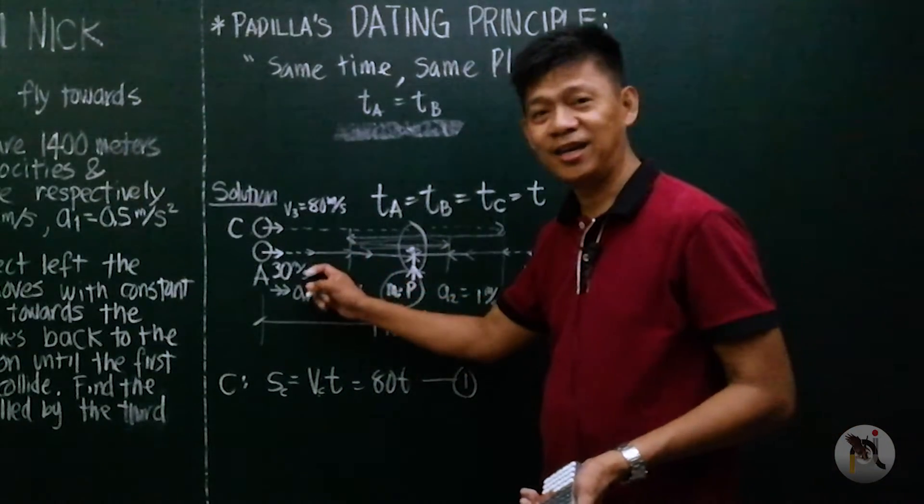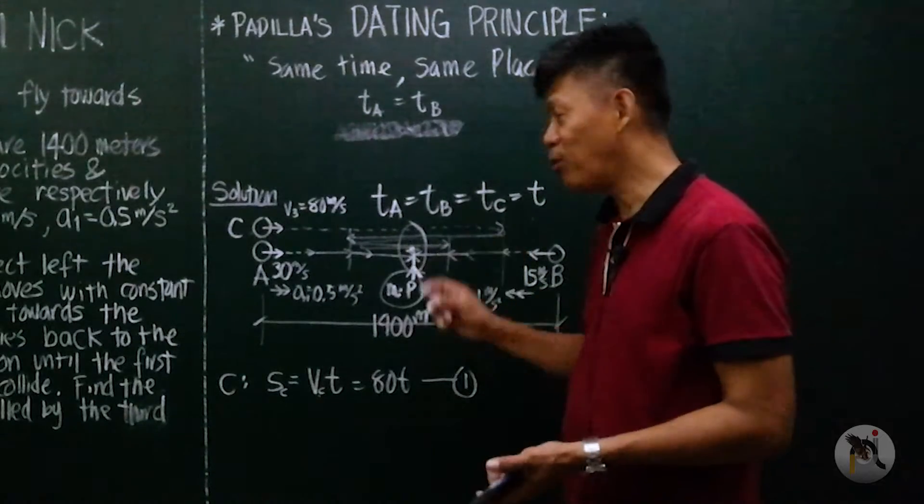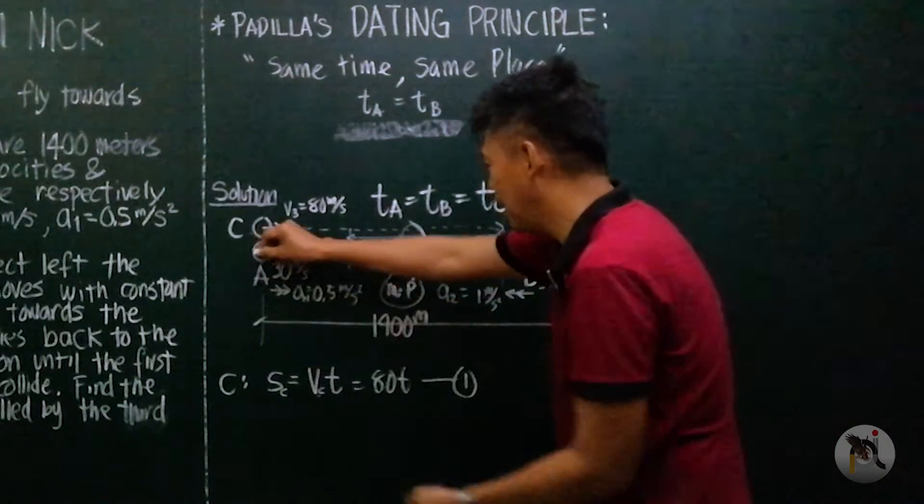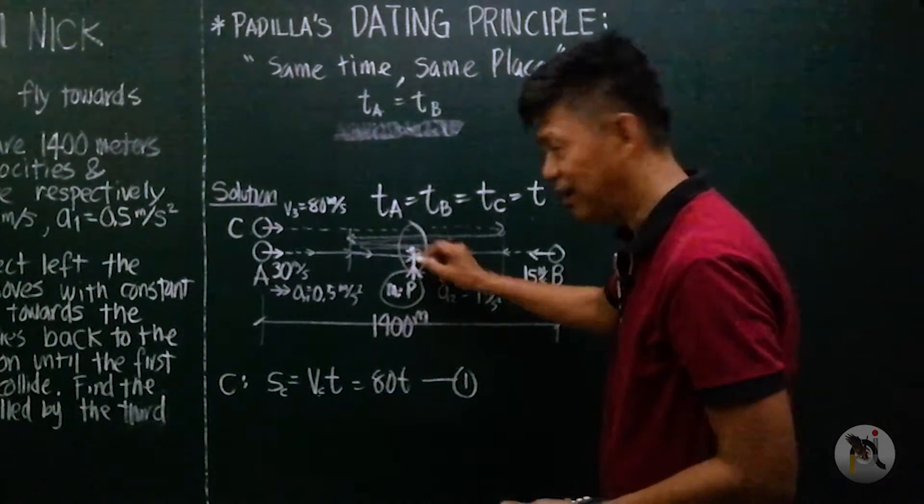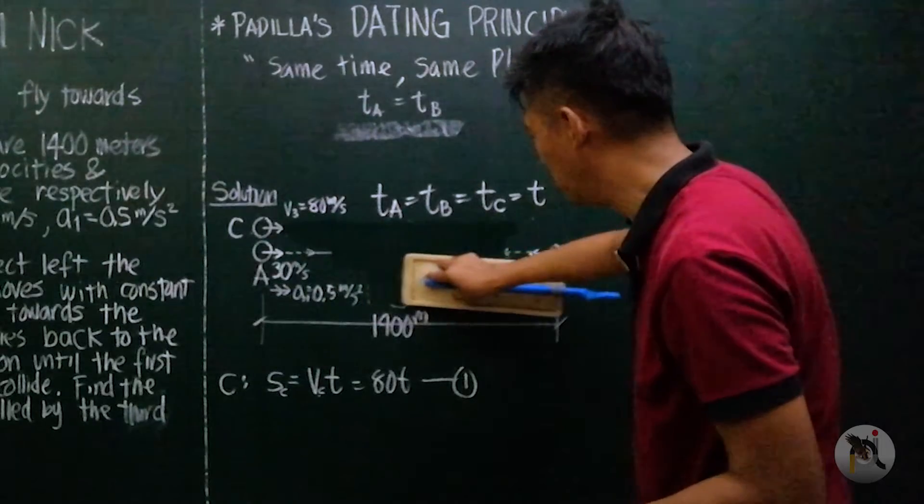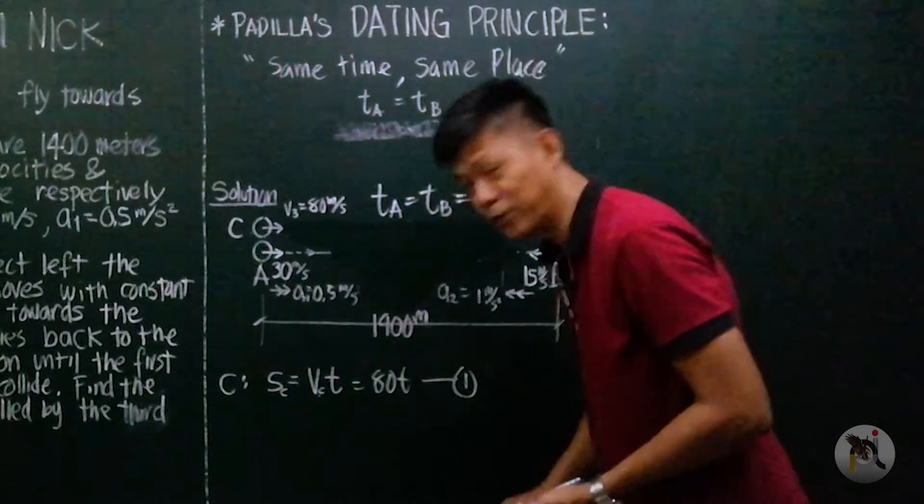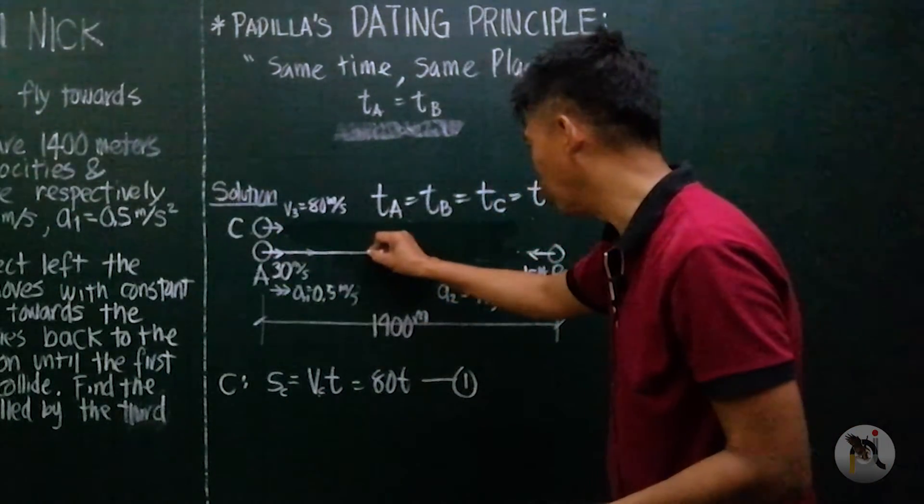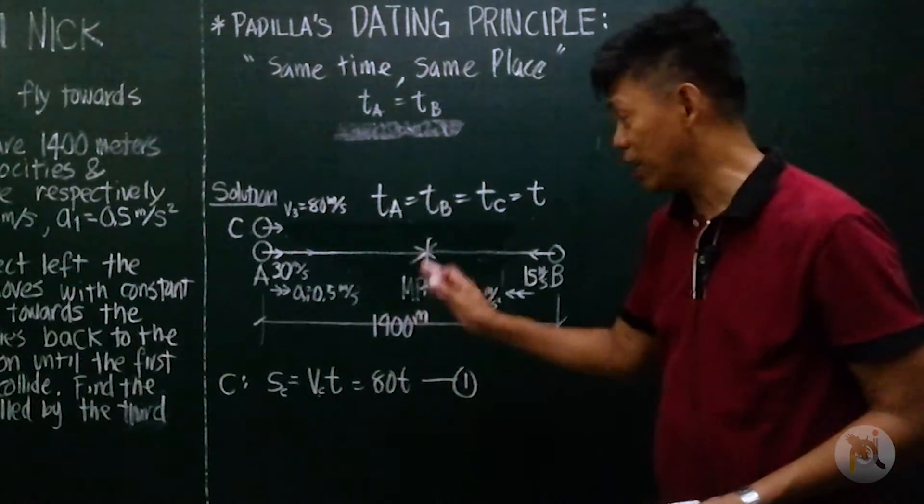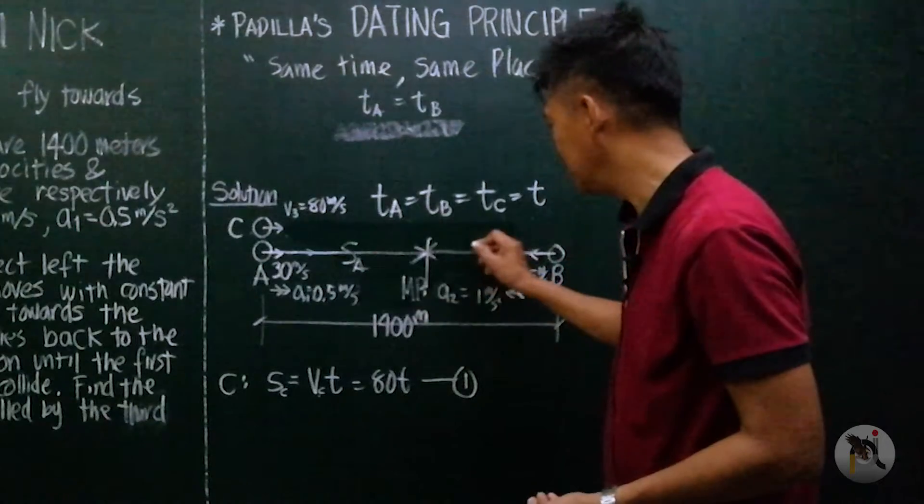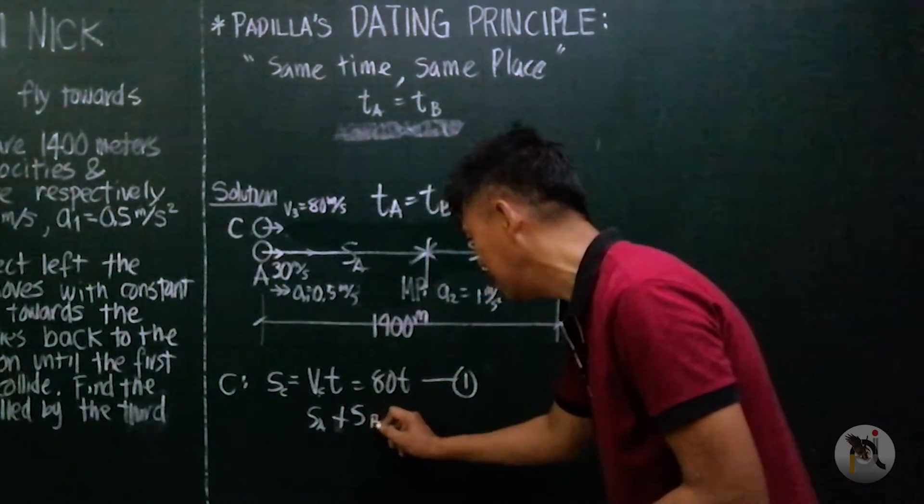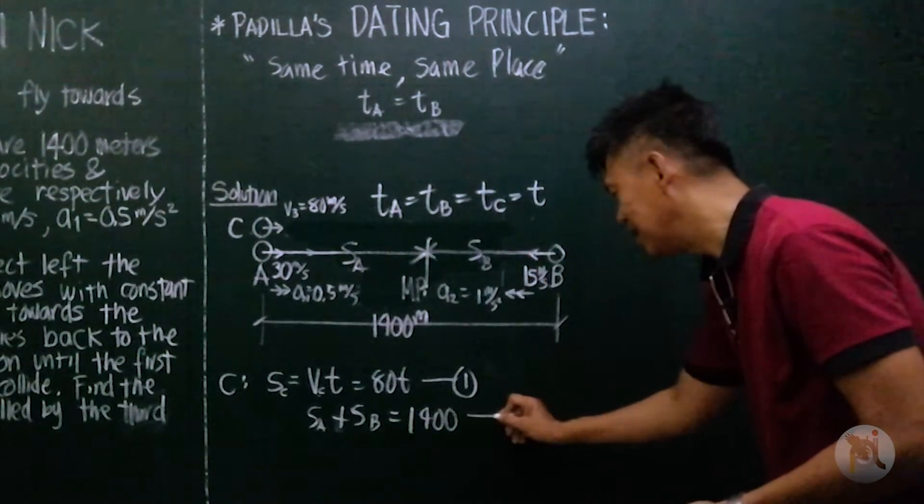The time for object A and object B are also the same as T. But what is the equation between A and B? We know that the total distance traveled by them, S for A and S for B are equal. If I'm going to clear this drawing, let me clean this up. Let me remove first in the picture object C. Object A and object B eventually will meet. This is the meeting point where object C will also reach or will also meet them. This is S_A, this is S_B. Now we know here that S_A plus S_B is equal to 1400.